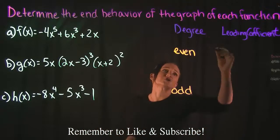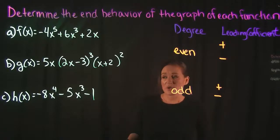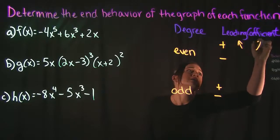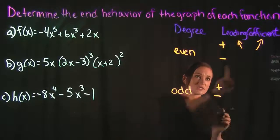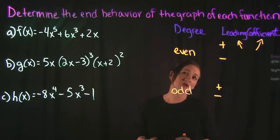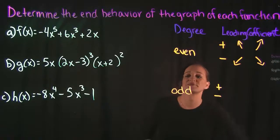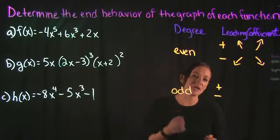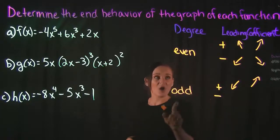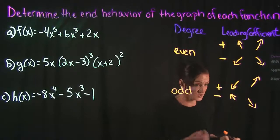Once we know that, we then want to look at the leading coefficient and we want to know: is it positive or is it negative? If it's an even function and the leading coefficient is positive, your end behavior is going to be rising to the left and rising to the right. If the degree is even and the leading coefficient is negative, it's going to fall to the left and fall to the right. If it's odd and the leading coefficient is positive, it's going to fall to the left and rise to the right. If it's an odd degree with a negative leading coefficient, then it's going to rise to the left and fall to the right.